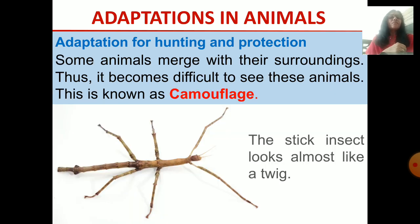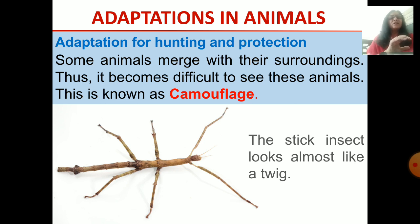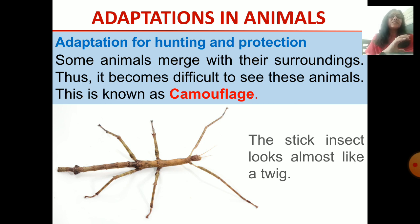Here is another term which is new to you, and that is camouflage. Camouflage means some animals look similar to their surroundings so that they can merge into those surroundings and it becomes difficult to spot those animals. Some animals merge with their surroundings and it becomes difficult to see them — this is known as camouflage.